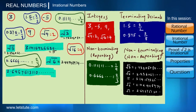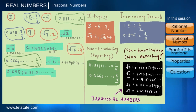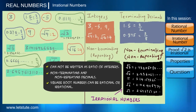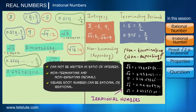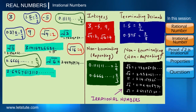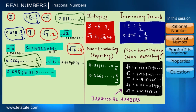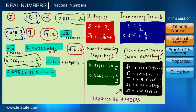We can conclude that root 3, root 5, 3.141592..., root 6, and 2.6457513110... are not integers and are non-terminating and non-repeating decimals. This means they are not rational numbers, so they are called irrational numbers. Irrational numbers cannot be written as the ratio of integers. Also note that a square root number can be rational or irrational — root 4 and root 16 are integers, but root 3, root 5, and root 6 are irrational.